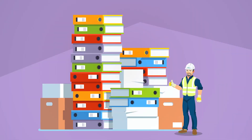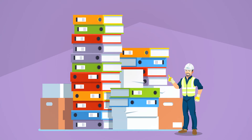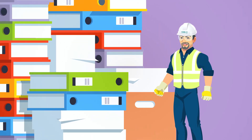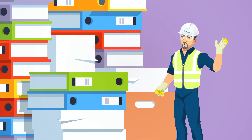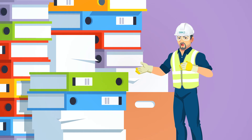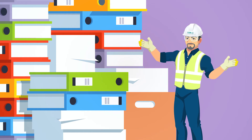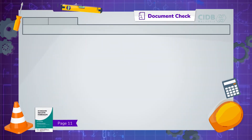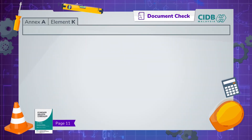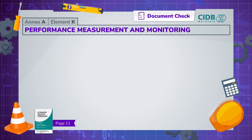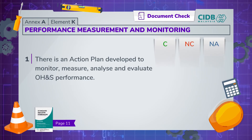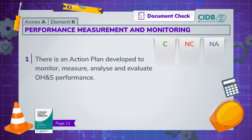Well done! It's an achievement that you've gotten so far in the checklist. We've got a few more elements to go, so come on, let's do it! In element K, we assess the OSH performance measurement and monitoring documentation. First, cite the action plan developed to monitor, measure, analyse and evaluate OSH performance.